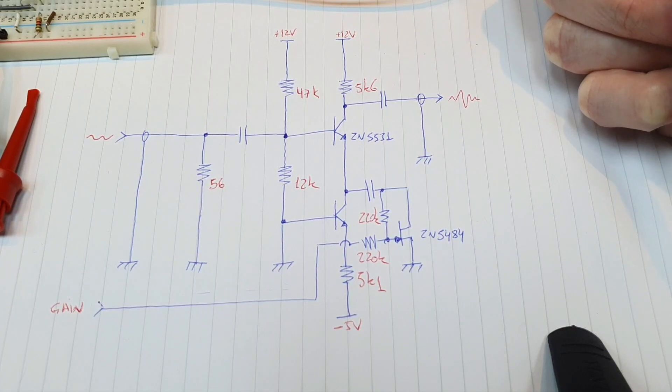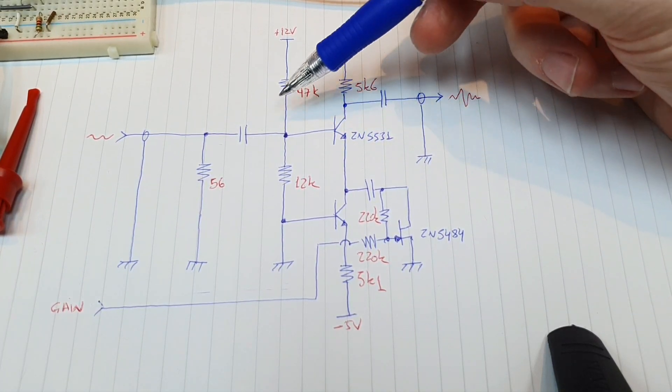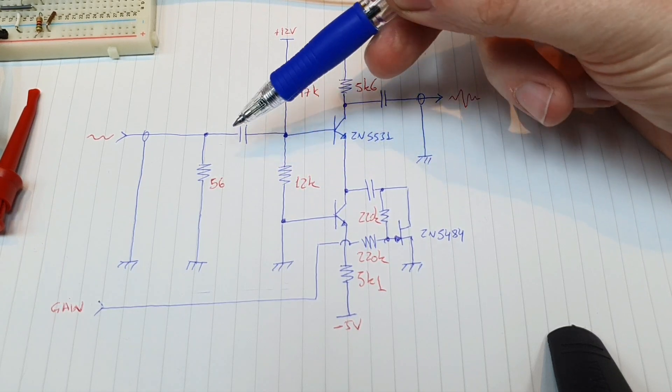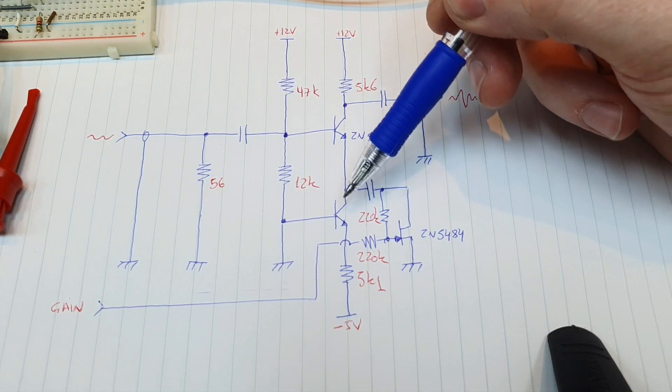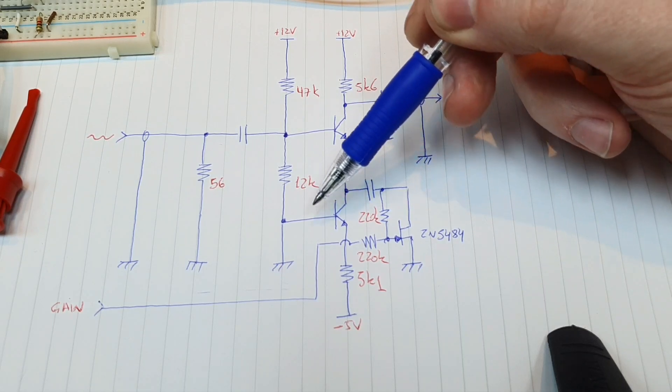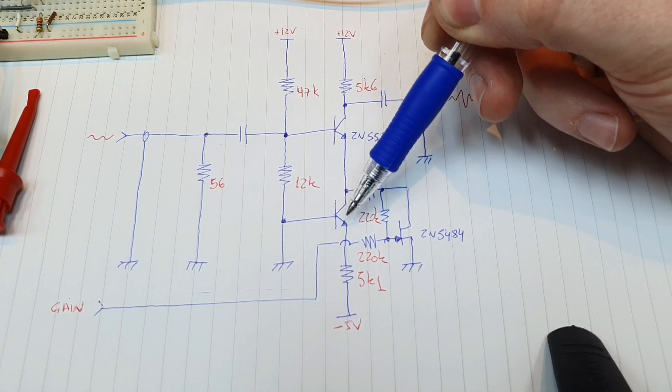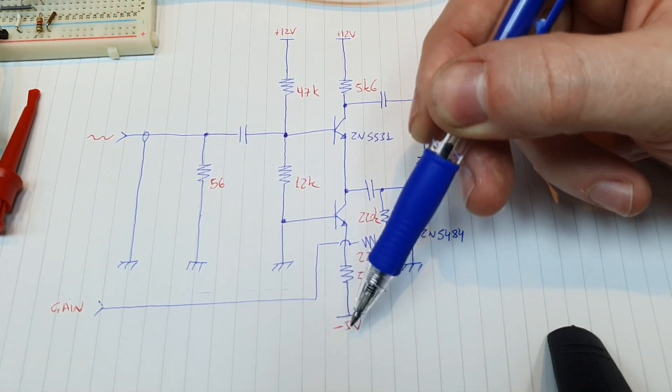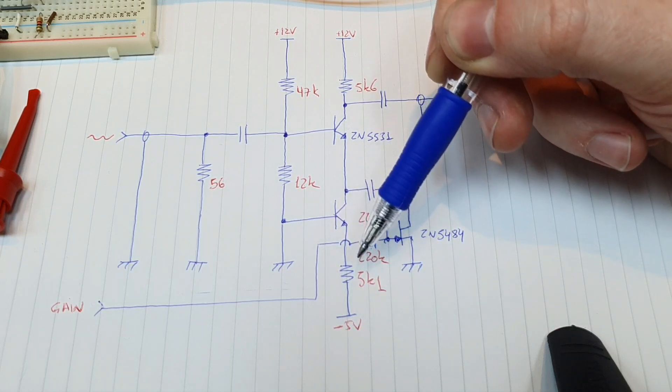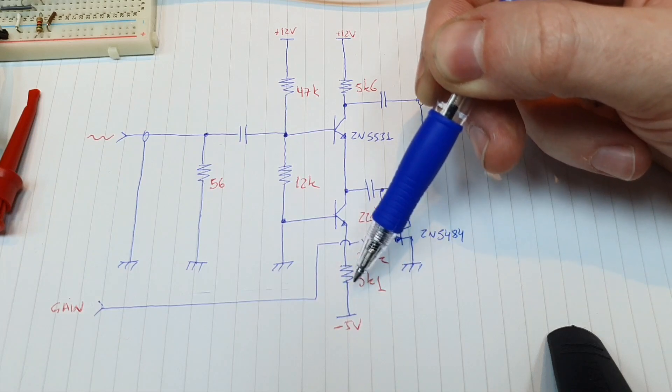Here you can see the topology. So this transistor is the amplifier transistor in a normal configuration here with the input signal AC coupled here on the base and in the emitter of the transistor we have a current source made by this BJT here with the base on the ground and the negative supply here doing the constant current over this resistor here, this emitter resistor.